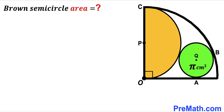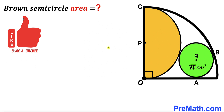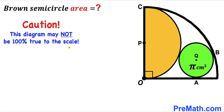Welcome to Pre-Math. In this video we have a green circle along with a brown semicircle fully inscribed in a quarter circle, where O is the center of the quarter circle, P is the center of the brown semicircle, Q is the center of the green circle, A and B are the points of tangency. The area of the green circle is given as π cm², and our task is to calculate the area of the brown shaded semicircle. Note that the figure may not be 100% true to scale.